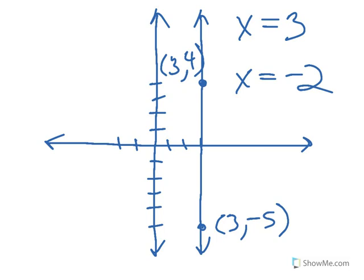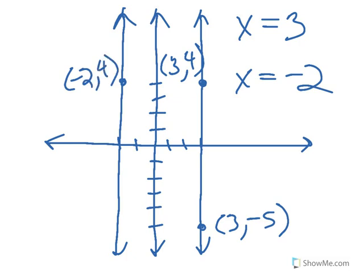The same way with x equals negative 2. Every x-coordinate on this line is going to be negative 2. That's negative 2, 4. And this is negative 2, negative 5. Every point on the line is going to be just like that. So this is x equals negative 2, right here.